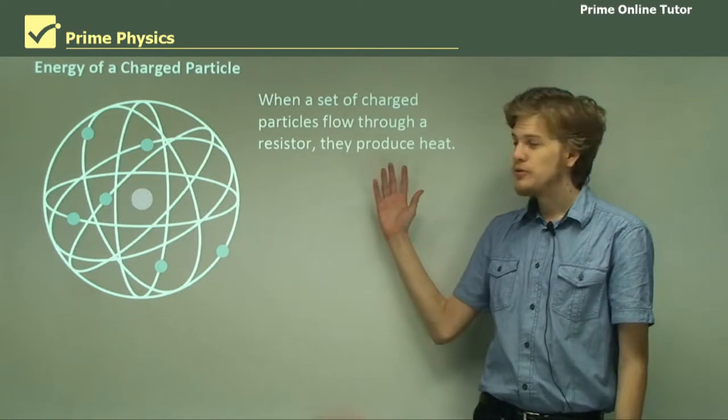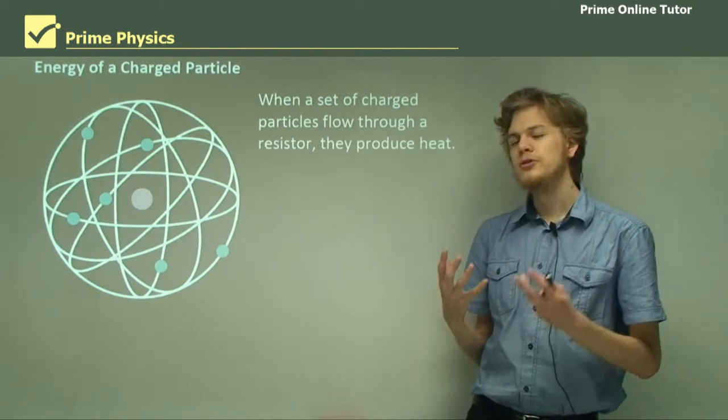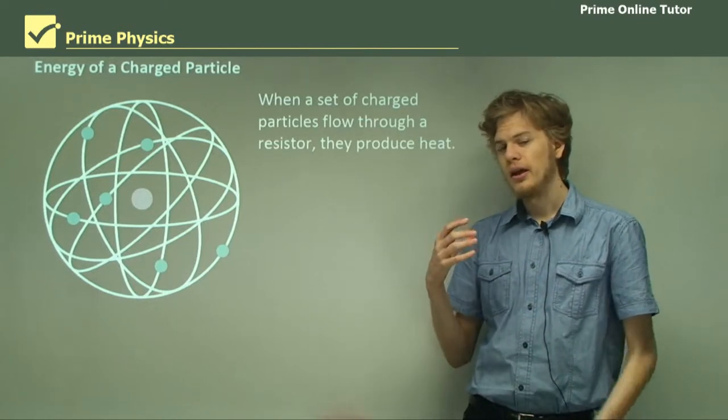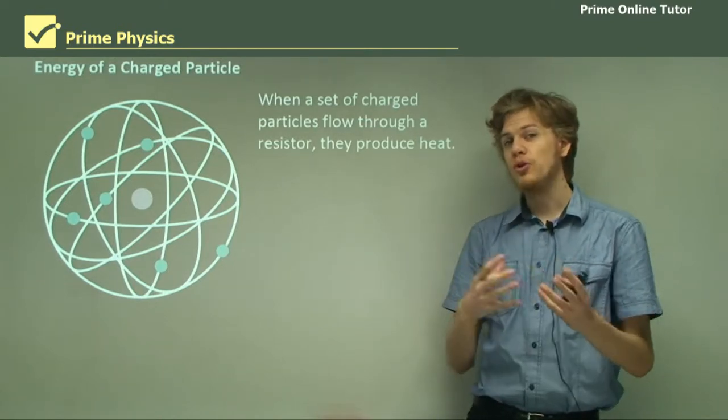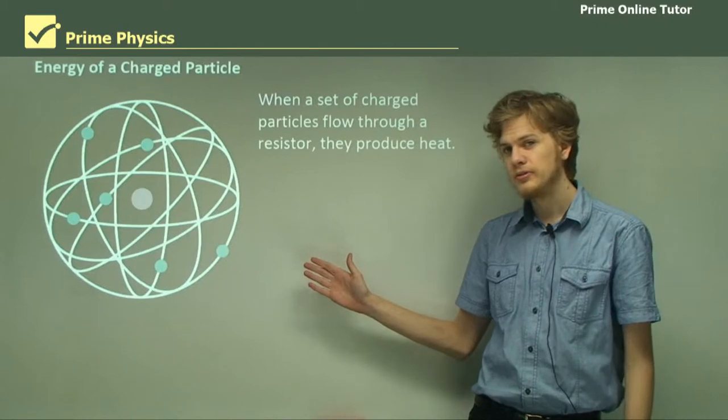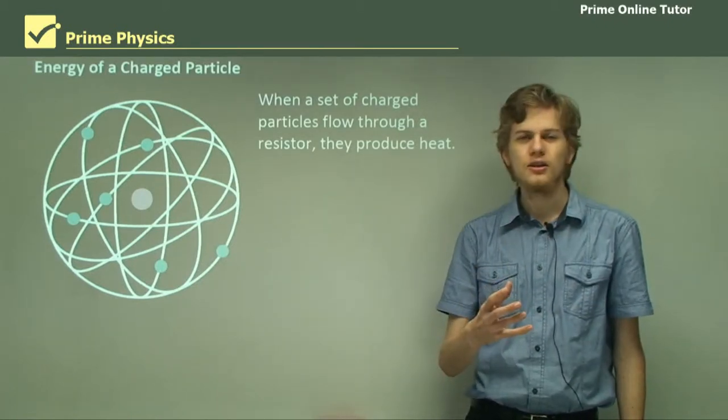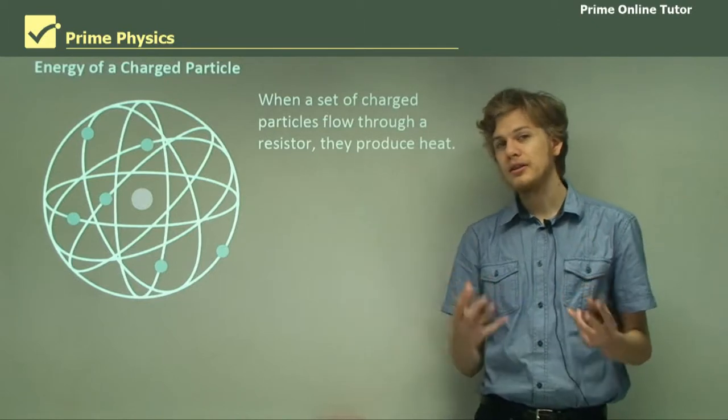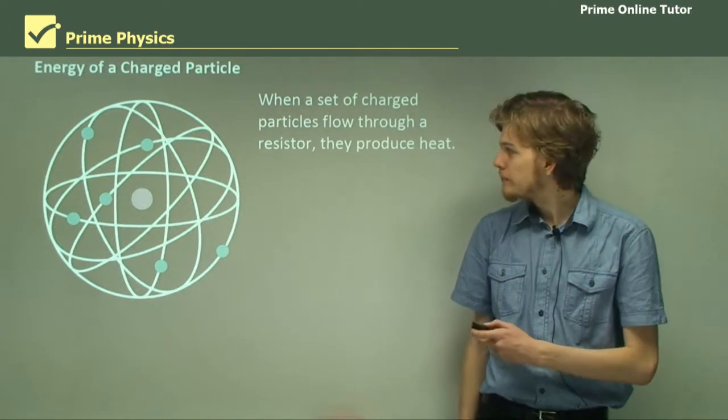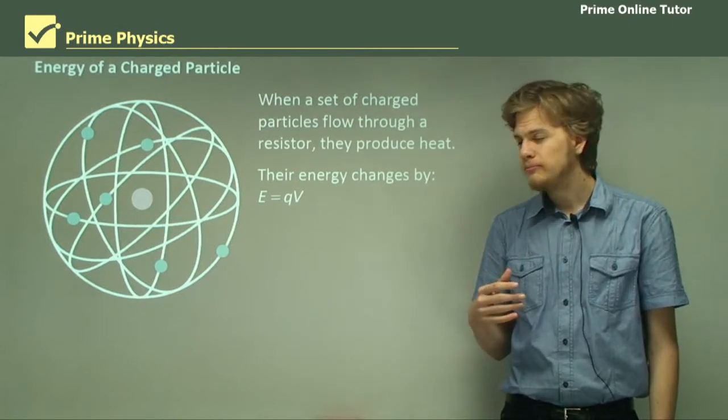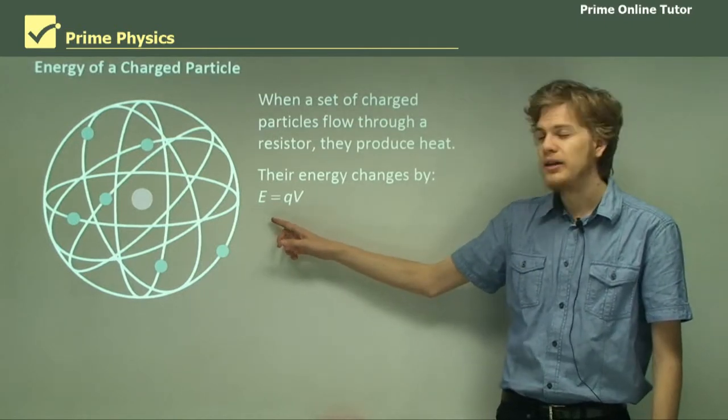When a set of charged particles flow through a resistor, they produce heat. They transform the kinetic energy of the movement of, for example, electrons into the heat energy. That is, the kinetic energy of the vibration of the lattice.